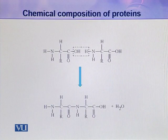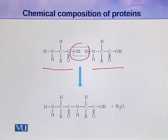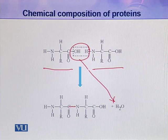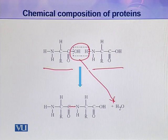Here you can see two amino acids combining together. One water molecule is eliminated, and with the elimination of this water molecule a covalent bond is established between the carbonyl carbon of one amino acid and the nitrogen of the other. This bond is a covalent bond, but it is called a peptide bond. In this way, two amino acids join together through a peptide linkage.